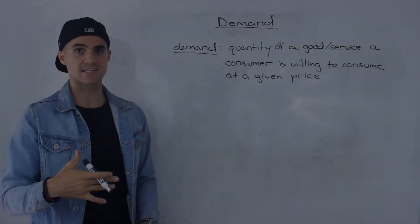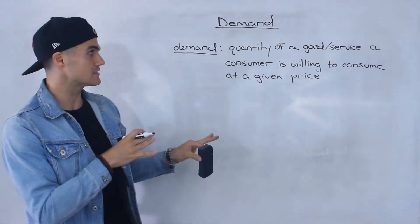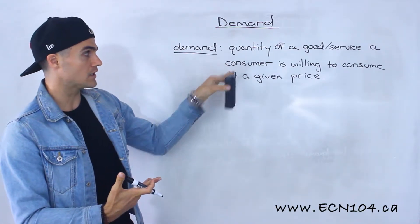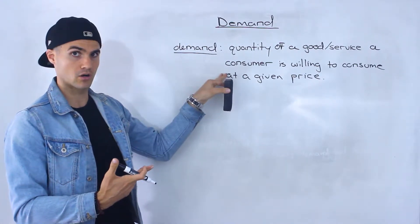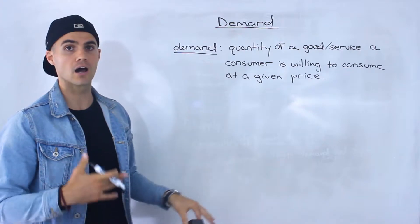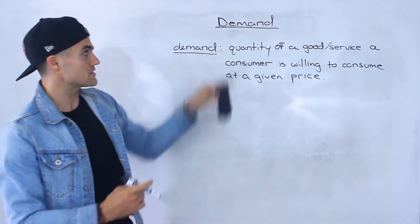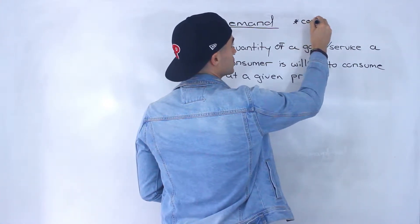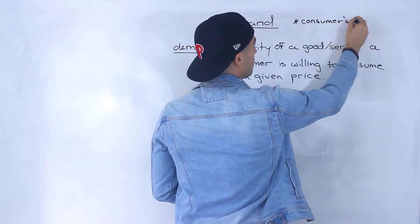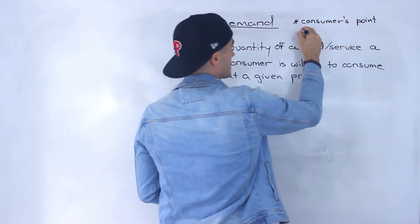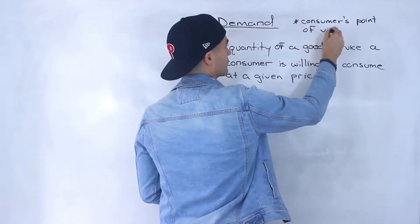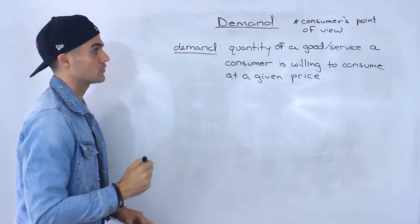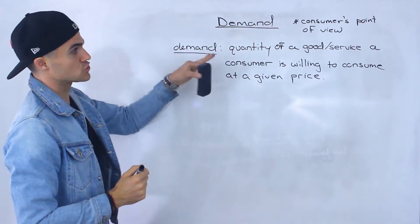Let's start talking about demand as a separate concept. Demand is basically the quantity of a good or service a consumer is willing to consume at a given price. Notice that demand is looked at from the consumer's point of view or the consumer's perspective, versus supply, which is going to be from the producer's point of view or the producer's perspective.